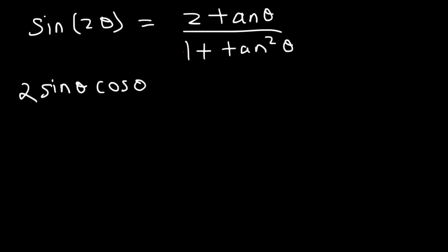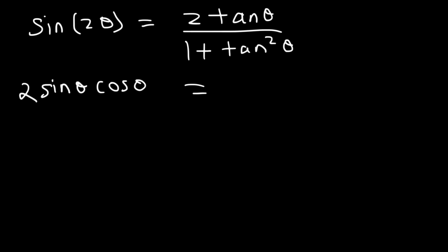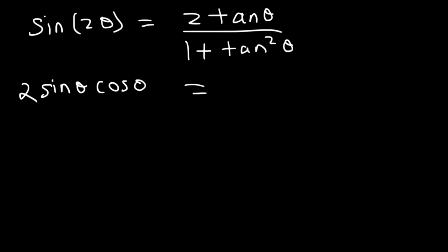Looking at the angles — tangent is θ here but we have 2θ — so we need to make sure the angles are the same. By using the double angle formula we can take a 2θ angle and break it down to θ. Now let's focus on the left side and write 2sinθcosθ as 2sinθ over 1, then multiply the top and bottom by 1/cos²θ.